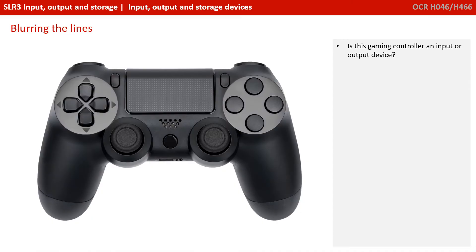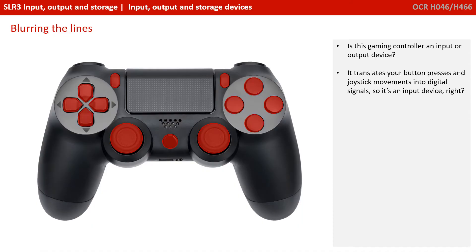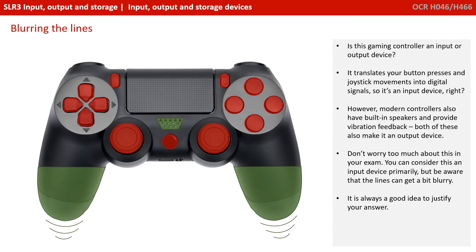Sometimes things aren't quite as simple as they seem. Here we have a gaming controller for a typical games console — would you consider this an input device or an output device? Well, it certainly translates your button presses and joystick movements into digital signals and sends them to the console, so surely it's an input device. But most modern controllers also have built-in speakers and provide vibration feedback, and both of these are output systems — so surely it's also an output device.